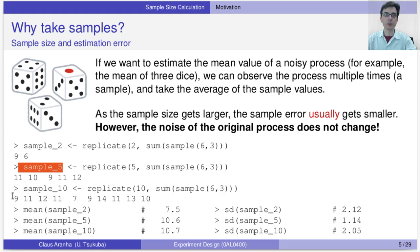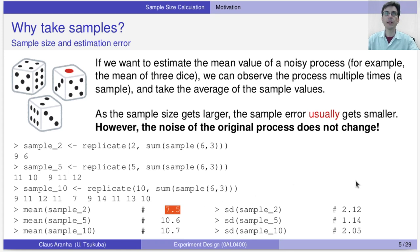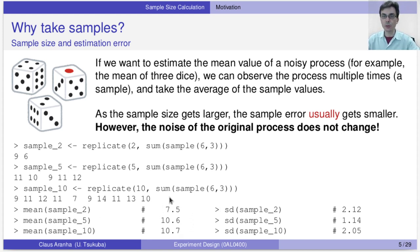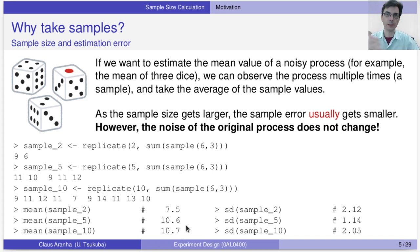Then I throw the dice 10 times and get: 9, 12, 7, 9, 14, 11, 13, etc. For the sample with size two, the mean was 7.5 — much farther from the true mean — and the standard deviation was 2.2. For a sample of size five, the mean was 10.6 and the standard deviation was 1.14. For a sample of size 10, the mean was 10.7 and the standard deviation was 2.5. We can see that moving from size two to five got us much closer to the true mean, but moving to size 10 moved us a little farther away, reflecting the process noise. Increasing the sample size will reduce the noise but will not eliminate it. That's why we need to do statistical tests even with big sample sizes.